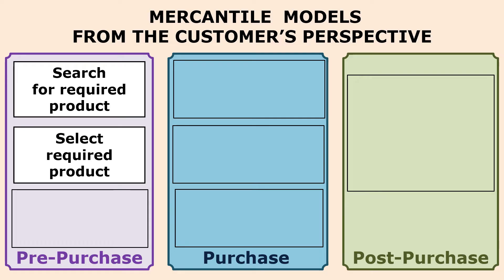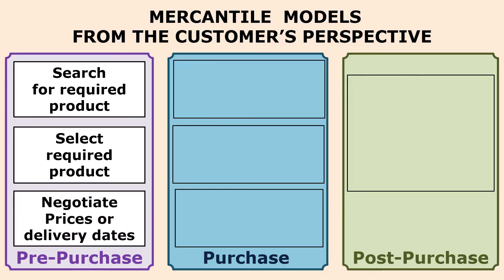Next is selecting the required product based on required features, price, and so on. Generally, people compare the features and check the prices across different online sellers, because the main intention is getting the best product at a cheaper price.